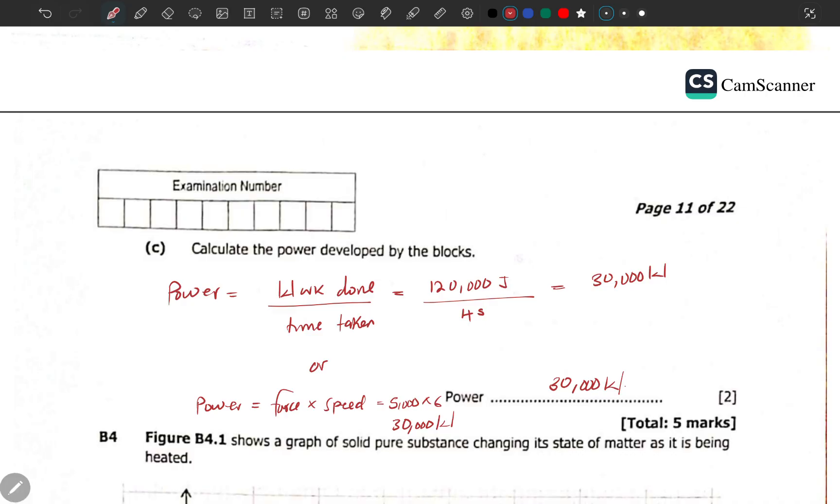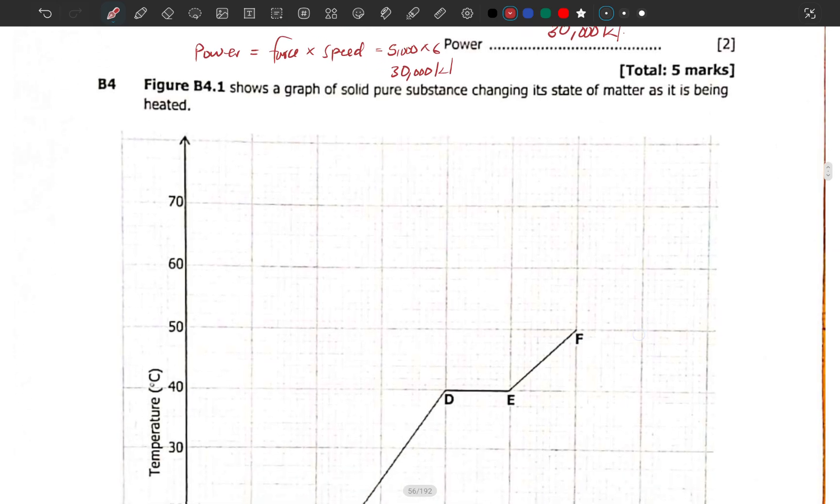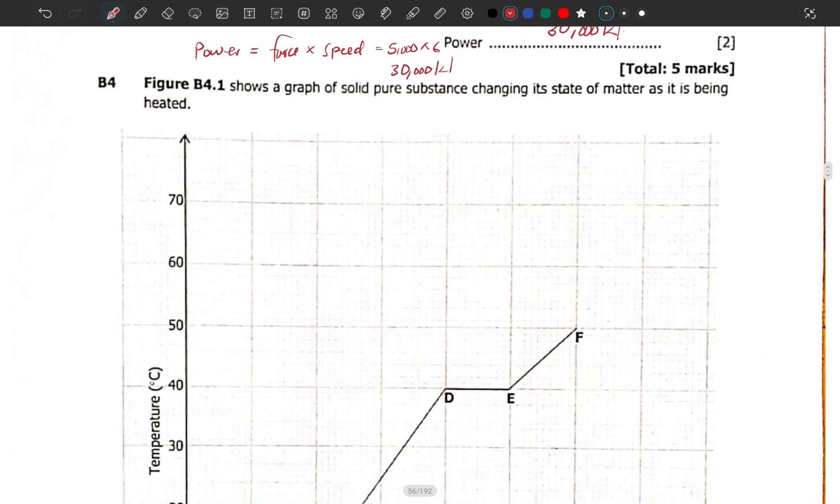How many minutes have I taken to answer this question? That is like closer to three minutes. Let's go to the graphical question, question number B4. Figure B4.1 shows a graph of solid pure substance changing its state of matter after it is being heated. The key idea is being heated, meaning it's melting, changing its state from solid to liquid to gas.